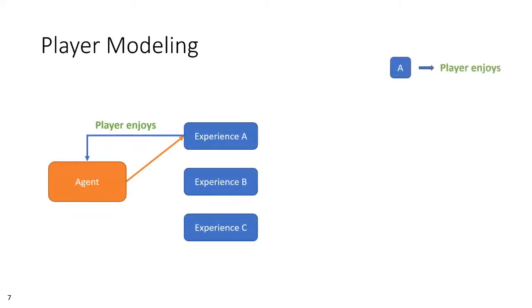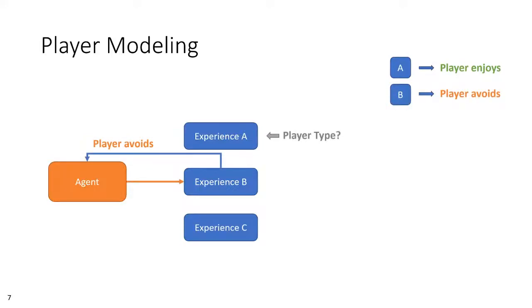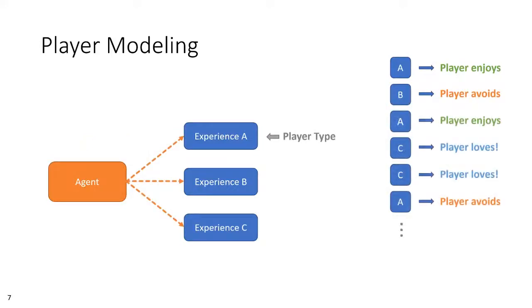Our approach takes advantage of this by setting up the categories of the player model as arms in the MAB problem, where each arm provides a different option for a game experience. Looking to resulting player metrics as a reward measurement, we allow the agent to converge on the arm that yields the best result for the player, thereby categorizing the player within the model. In this case, the method is the model, and the bandit is simultaneously the system that classifies players and the AI that adapts the game.